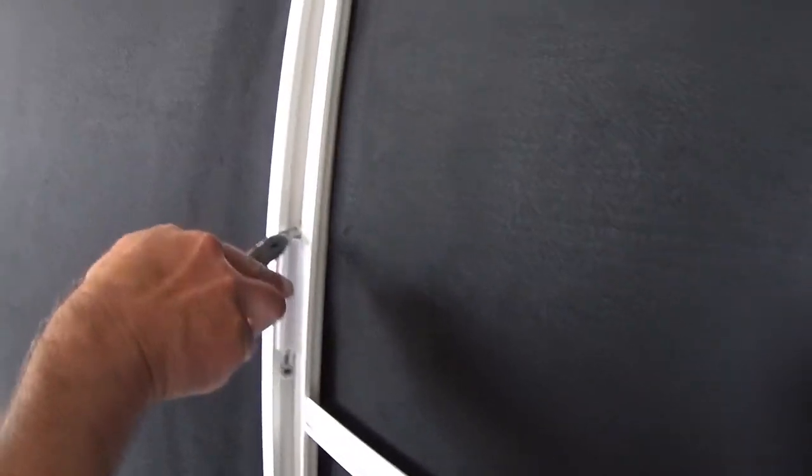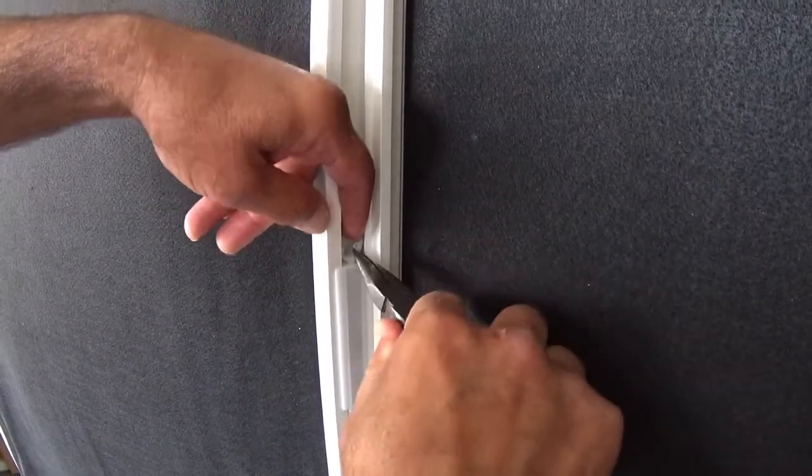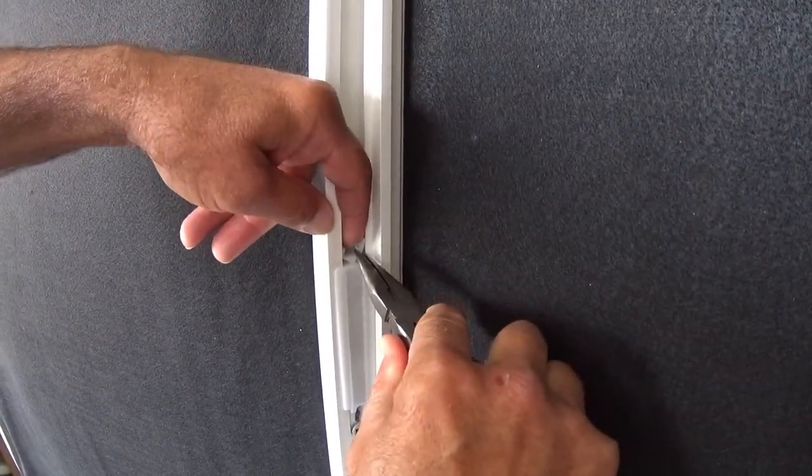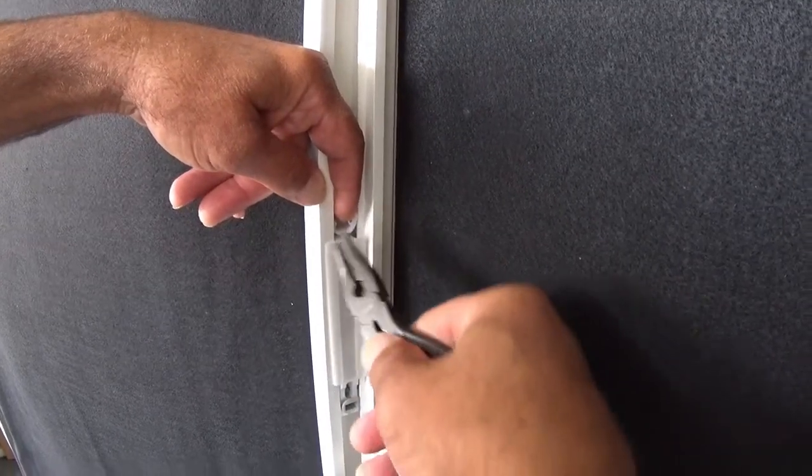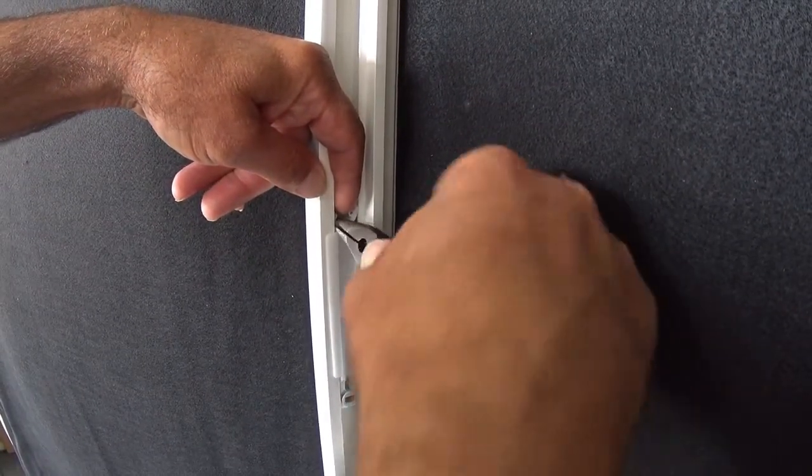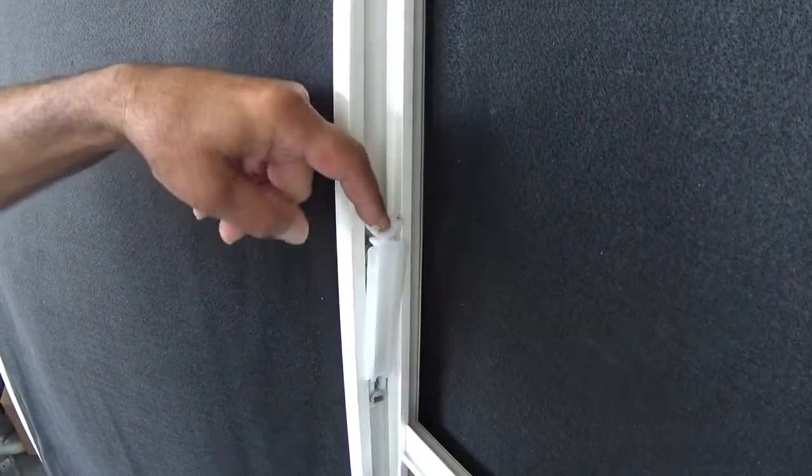So with your needle-nose pliers, you look here, you can see that there's little tab, little finger tabs. Grab your needle-nose pliers, rotate that inward and hold the one side out. Do the same on the opposite side until you release the carrier out of the pocket.